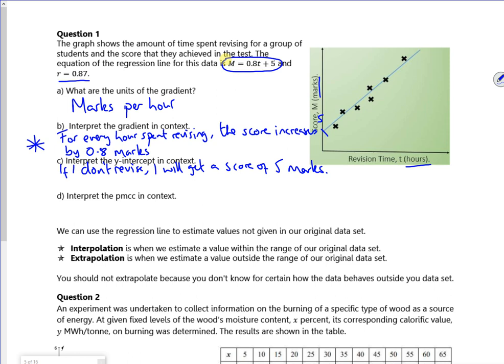So interpret the PMCC in context. So there's a fairly good positive correlation there. So as the time spent revising increases, the test score increases, which is what you'd expect isn't it really?